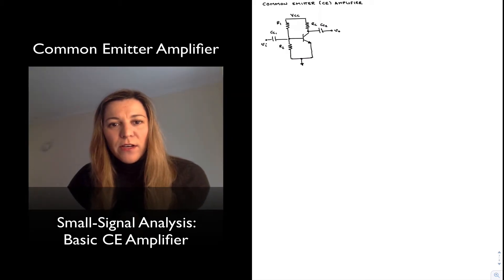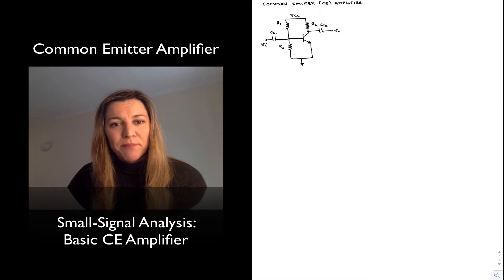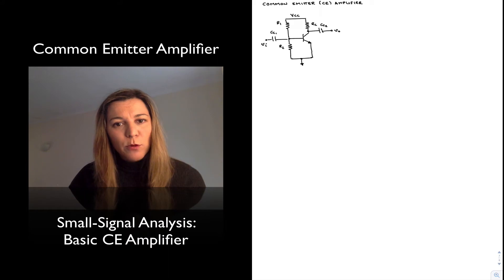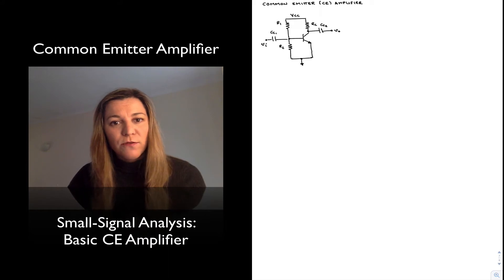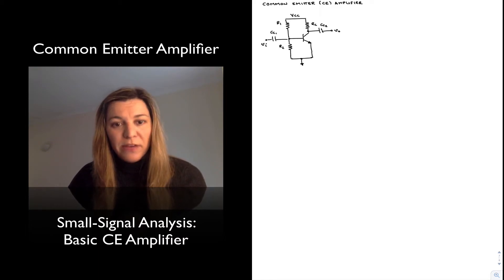We have derived the expression for the gain and input and output resistance for a common emitter amplifier, but we have done so using an intuitive feeling for how the circuit works. We haven't really done a formal derivation for those parameters, so in this video we're going to do a formal derivation for gain, input, and output resistance of a common emitter amplifier.